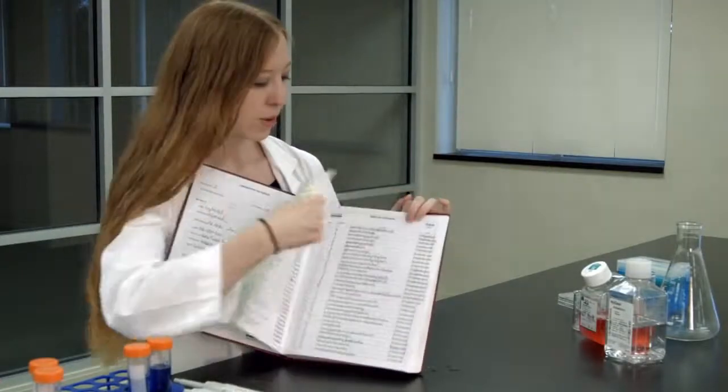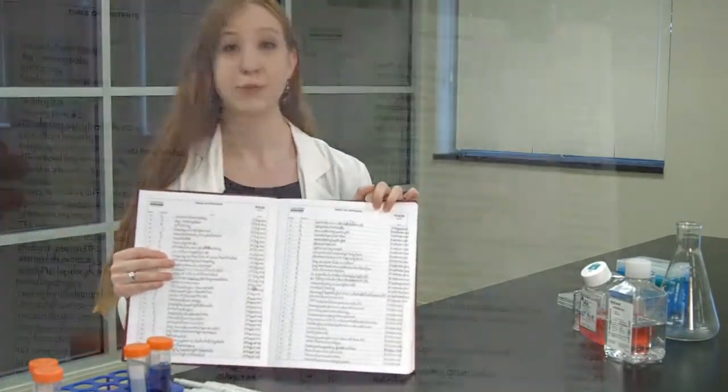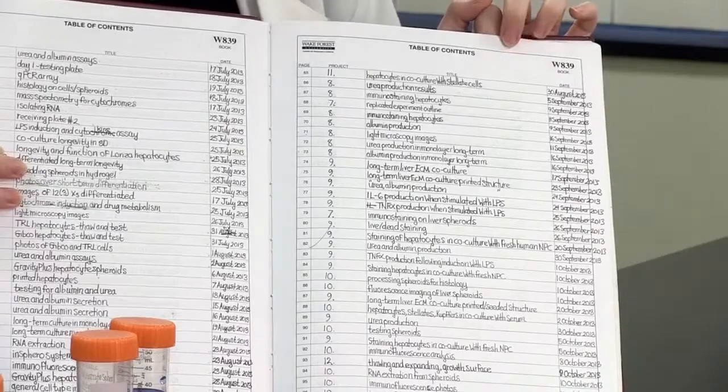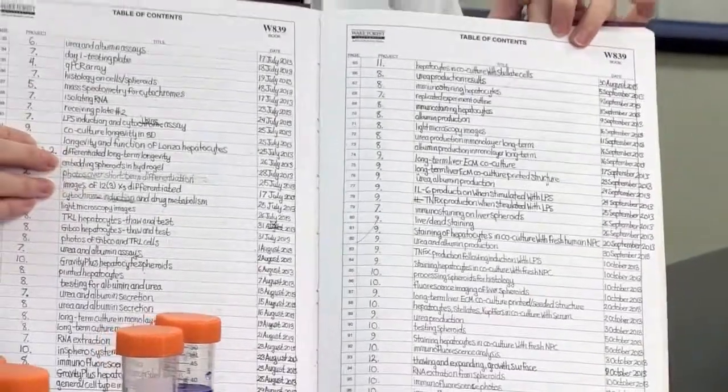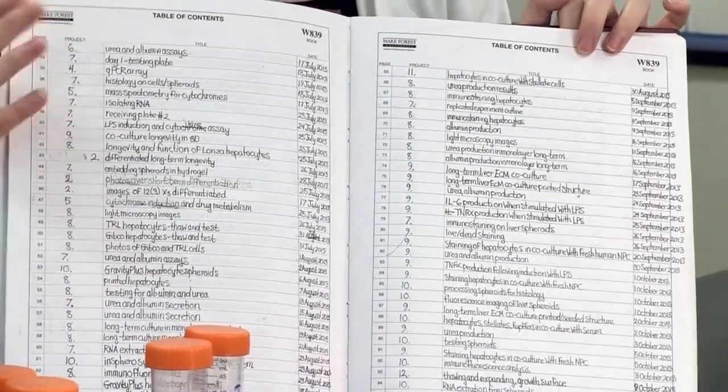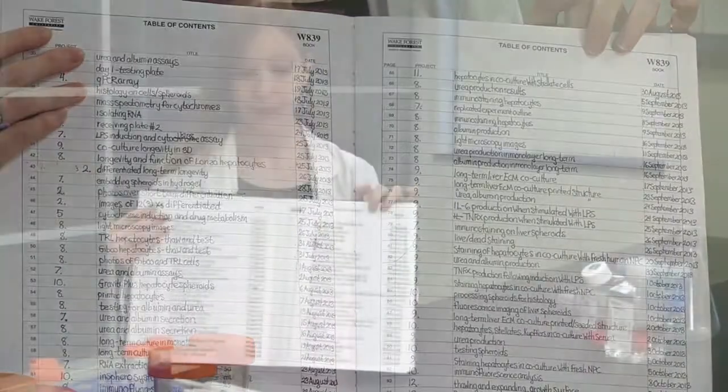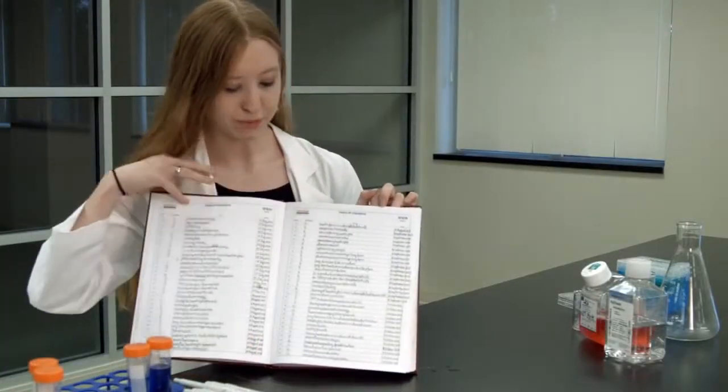What I would argue is the most important thing of a lab notebook is your table of contents. It takes a little bit of extra time to do, but it's really helpful when you're trying to look back to a past experiment or technique and you need to find it quickly. It also helps you keep very organized.